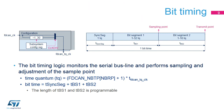The bit-timing logic monitors the serial bus line and performs sampling and adjustment of the sample point by synchronizing on the start bit edge and re-synchronizing on the following edges. The time quantum is the basic timing unit equal to TFDCAN-TQCK multiplied by a ratio from 1 to 512 programmed in the FDCAN-NBTP register. The bit-time is split into three segments: the synchronization segment, bit-segment 1 and bit-segment 2. Each of these segments is an integer multiple of the time quantum. The duration of BS1 and BS2 is independently programmable for nominal bit-time and data bit-time.